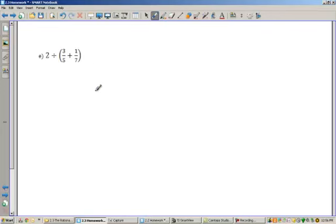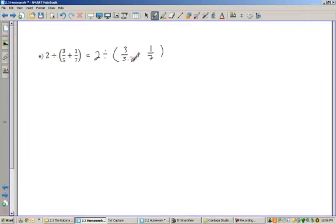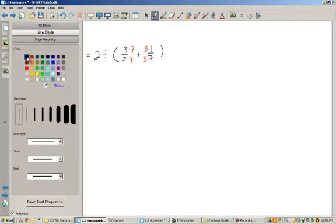All right, we can take this one step further and combine it with the order of operations. So like on this one, of course, I have to do the stuff inside the parentheses first. So this is 2 divided by, and I have 3 divided by 5 plus 1 divided by 7. Find a common denominator. So to find a common denominator, the easiest way to do this is just multiply the two numbers. So I multiply the top and bottom by 7, so I still have 3 fifths.